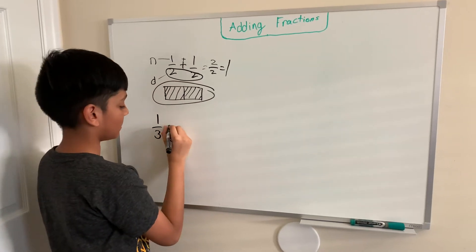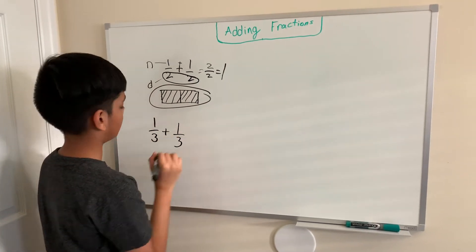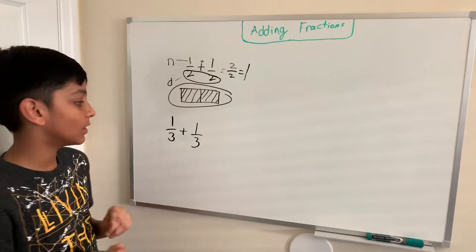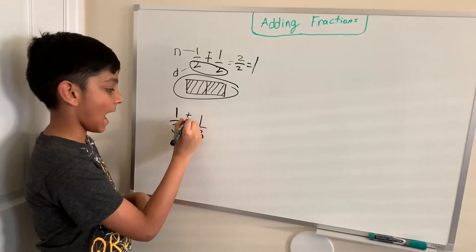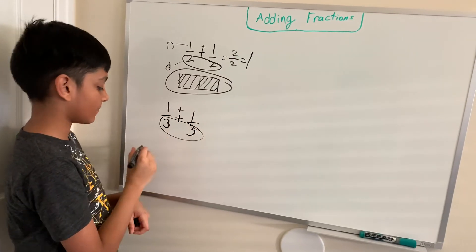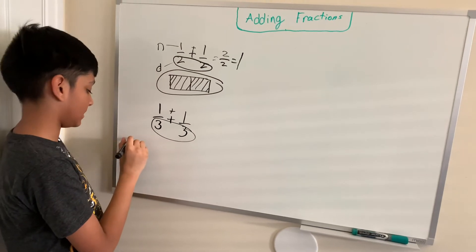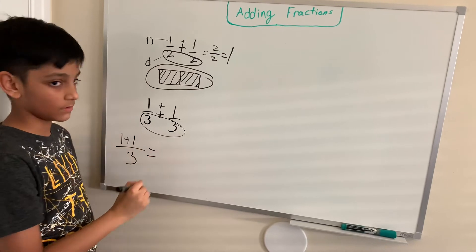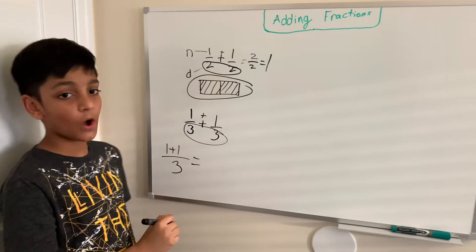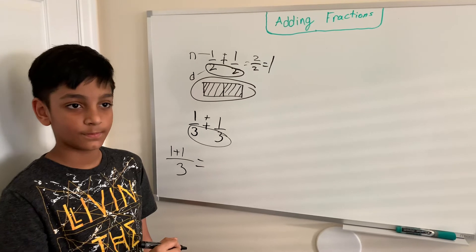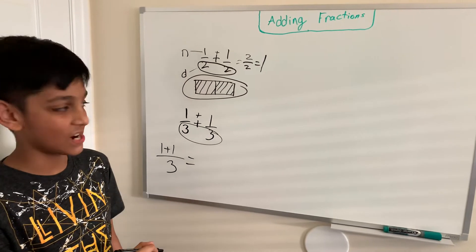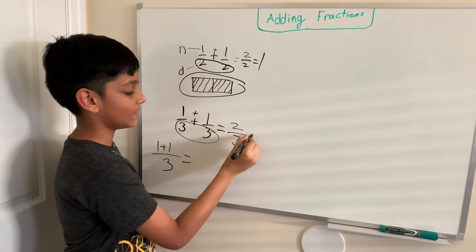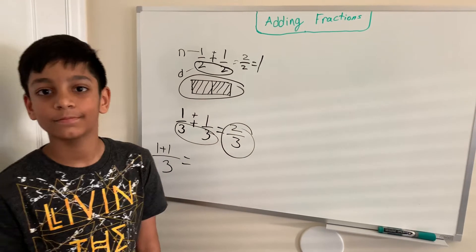Let's get another one: one third plus one third. Let's try to do this one without drawing it out. Remember, what we want to do is add the numerator and keep the denominator the same, which is why sometimes it's written like 1 plus 1 under the same denominator. Pause this video and try to figure it out for yourself. The answer is 1 plus 1 equals 2, keep the 3, so 2 thirds.